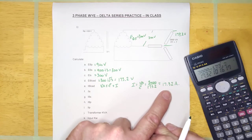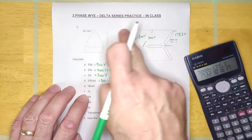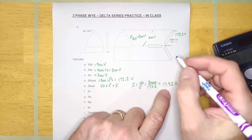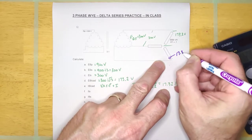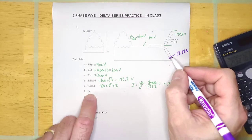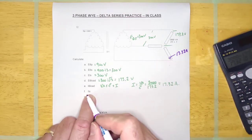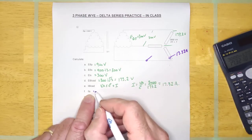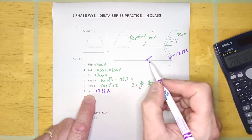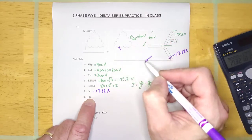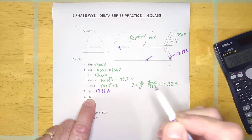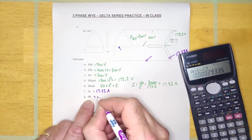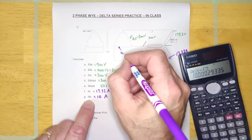Now it's just a matter of bringing that current back through the circuit. That 17.32 amps is I-phase load. Next is I-line secondary — even though it says line secondary, we look at the Y load: I-line secondary is right there and it's going to be all 17.32 amps. Then I-phase secondary: that 17.32 amps splits at the delta, so I-phase secondary equals 17.32 divided by root 3, which is 10 amps.